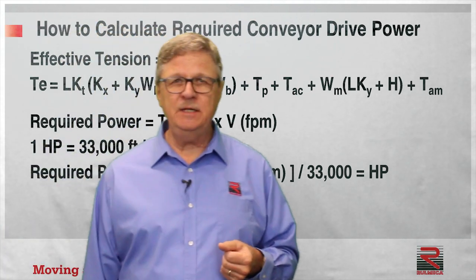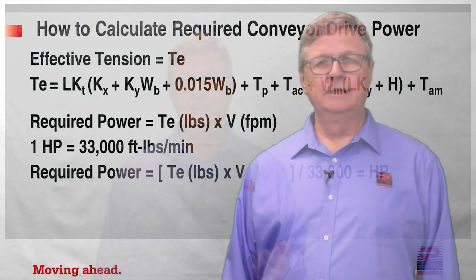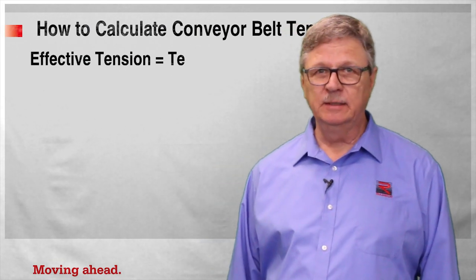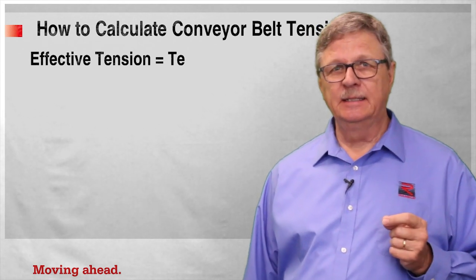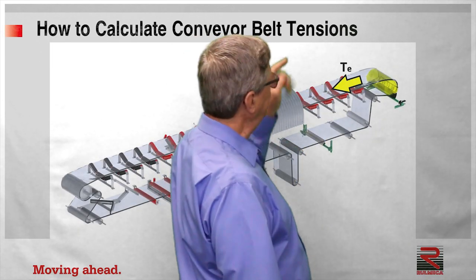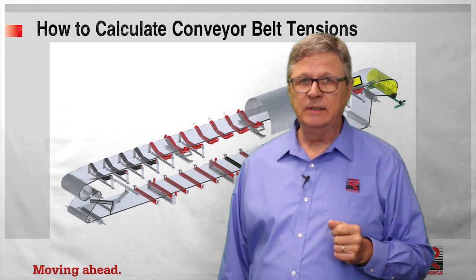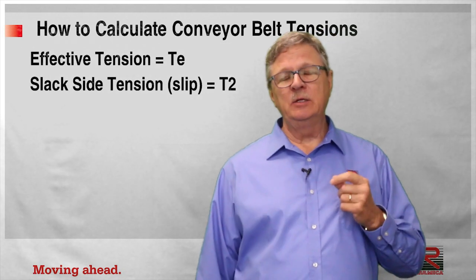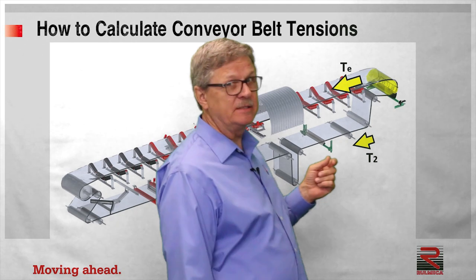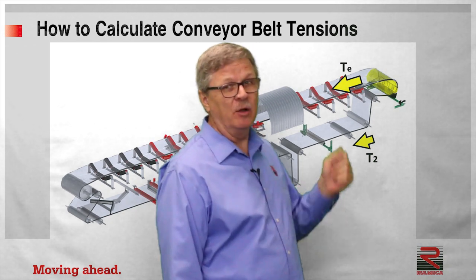Once we have effective tension, it's necessary to calculate other belt tension components. These are the essential belt tension components needed to properly design a conveyor belt. Effective tension TE on an inclined conveyor, when the drive is at the head, will be on the top strand in the vicinity of the upper pulley. The next important component is slack side tension T2, required to resist slippage of the belt on the pulley, located in the immediate vicinity of the drive pulley on the bottom strand.